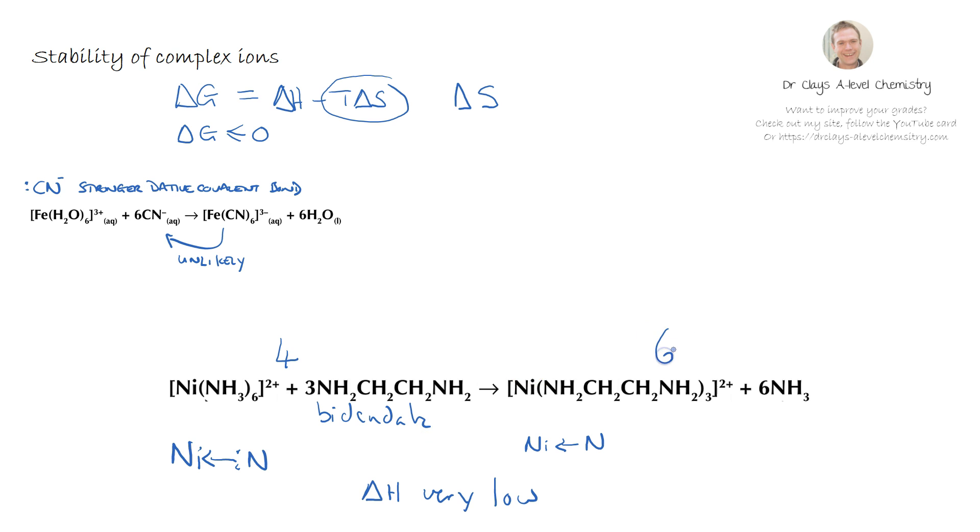We have got seven on the right hand side where we have got the complex plus the six ammonias. Therefore as we go from left to right we have got an increase in entropy and therefore the reaction is feasible because we have got a low enthalpy change and an increase in entropy. Hence the equilibrium lies quite heavily over on the right hand side.